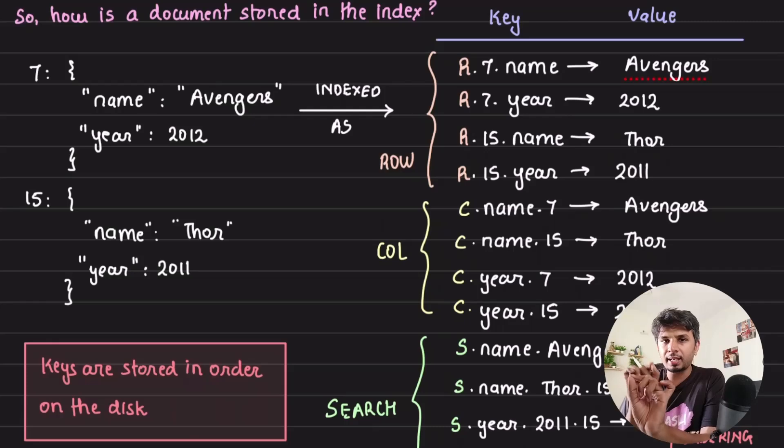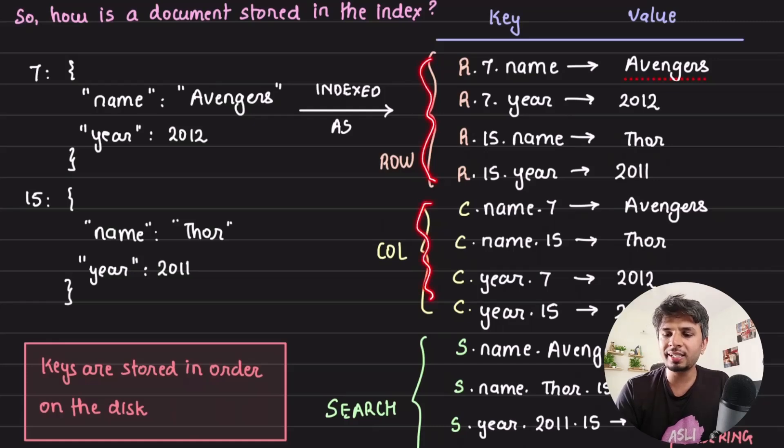The way the keys are constructed, it makes it efficient for a certain type of lookup. First of all, your keys are lexicographically ordered, which means all Rs would be together, all Cs would be together, all Ss would be together. Within R, these are stored in contiguous memory locations, which means all R.7, because the second component is 7, they would be staying closer to each other, then R.15 would be staying closer to each other. What is 7 and 15? Document IDs. So all attributes of a single document are placed closer to each other on disk.